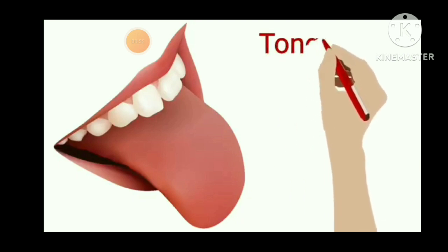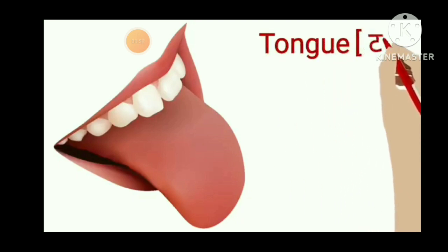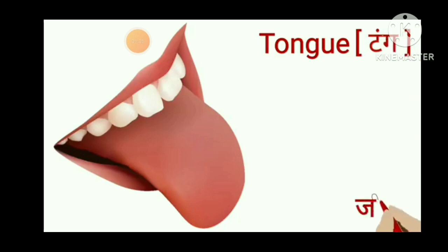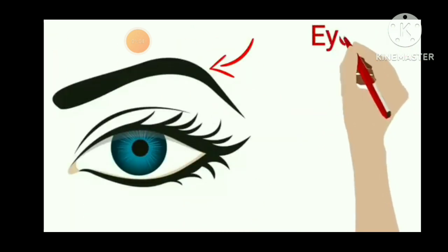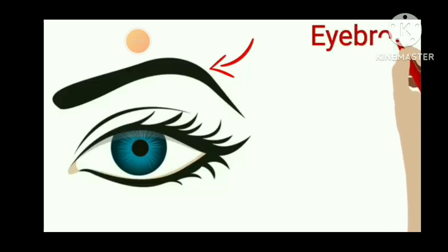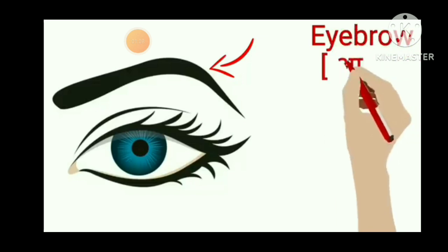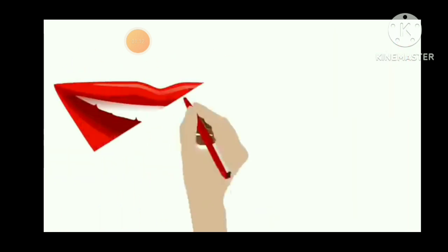T-O-N-G-U-E, tongue. Tongue means jeebh. E-Y-E-B-R-O-W, eyebrow. Eyebrow means boohin.